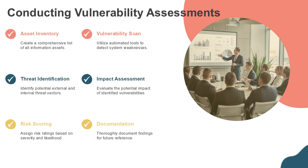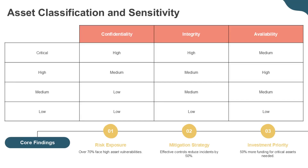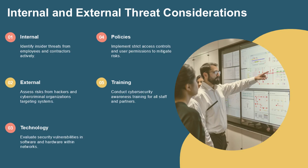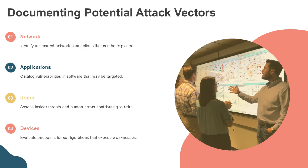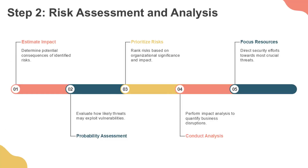A thorough risk identification phase requires conducting vulnerability assessments to expose weaknesses in systems and applications, classifying assets based on their importance and sensitivity to the organization, considering both internal factors such as configuration issues and external threats, and documenting all potential attack vectors that could compromise security. This foundational step creates visibility into the organization's risk landscape, establishing a baseline for subsequent analysis and mitigation efforts.